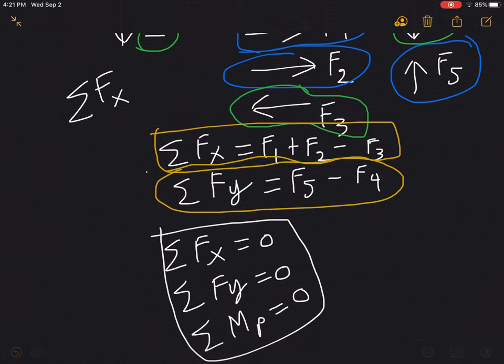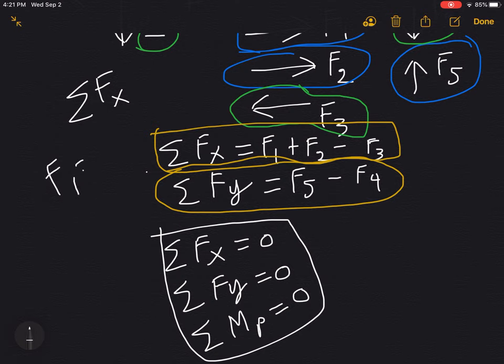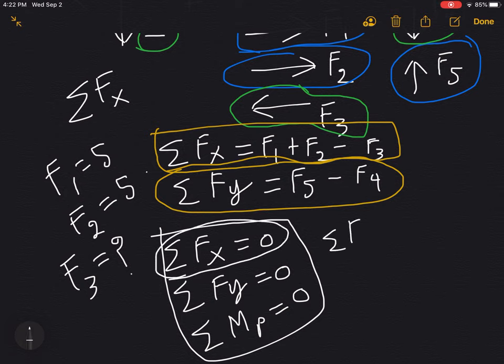So say that we know the value of F1 to be 5 and the value of F2 to be 5 as well. And the question demands to know what's the value of F3. So if you want to figure out the value of F3, we can use this equation of equilibrium. So summation Fx equals 0. That would mean F1 plus F2 minus F3 equals 0.